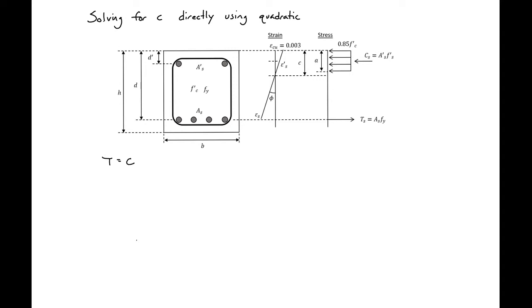Our tension forces, we have just our tension steel, so we'll have As times Fy. And on our compression side, we'll have our compression steel, As prime, Fs prime. We're going to assume that our steel doesn't yield. And then we'll have our compression component from our concrete: 0.85 F prime C B beta 1 C.